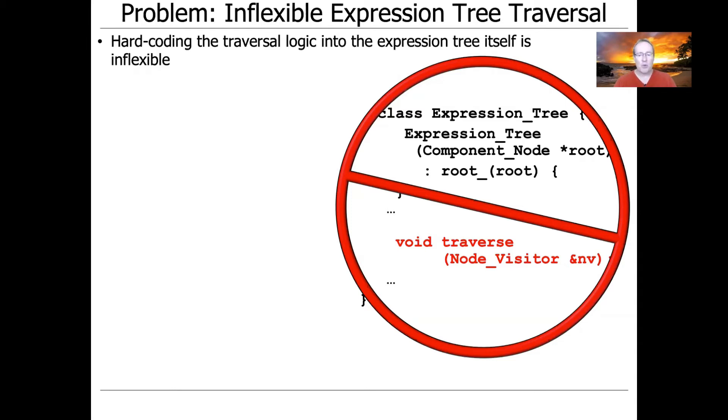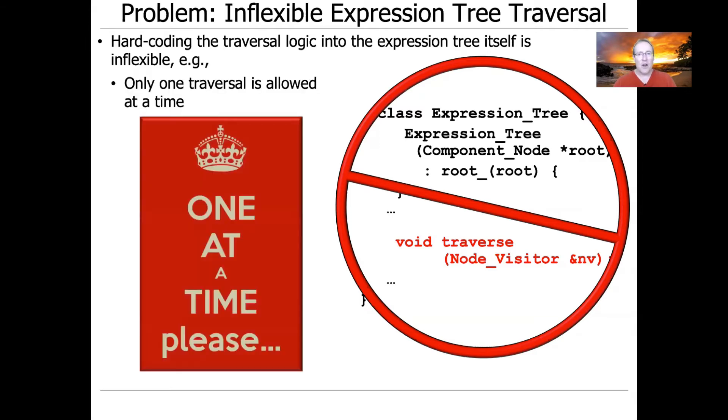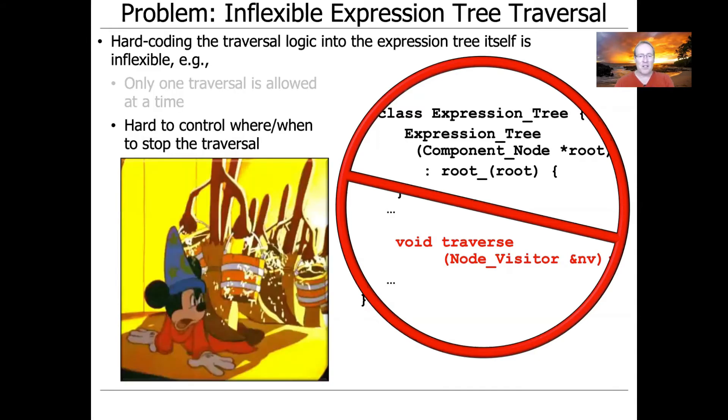There's a couple of problems with doing things this way, however. Only one traversal of the tree at a time is allowed. So you'd only be able to do one thing. And this is what's often sometimes called an internal iterator. But that's a bit inflexible.